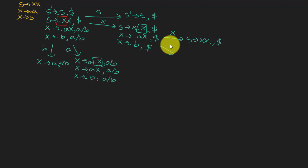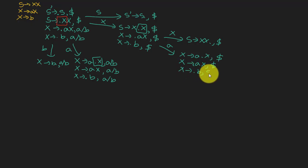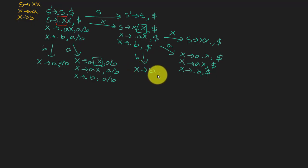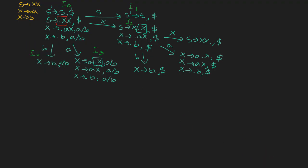Transitioning on input B gives X goes to B dot — an accepting state — and the look-ahead remains the same during transition. Transitioning on X gives S goes to XX dot with dollar look-ahead. No more closure needs to be applied. On input a from another state, X goes to a dot X, and applying closure to X gives X goes to dot aX and X goes to dot b.